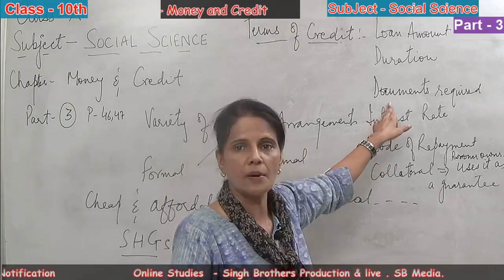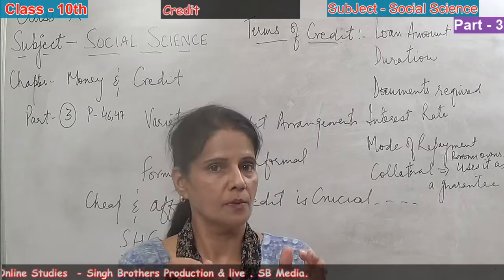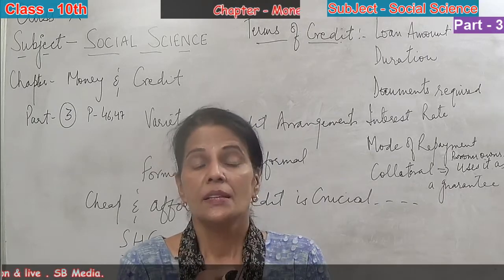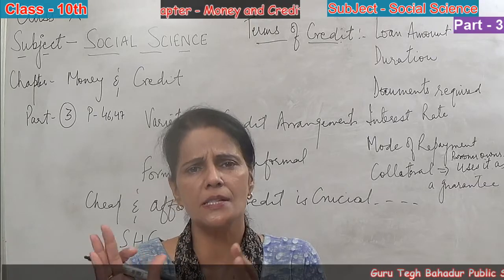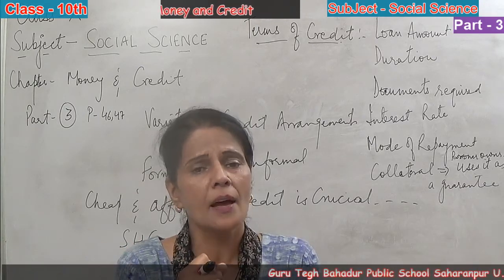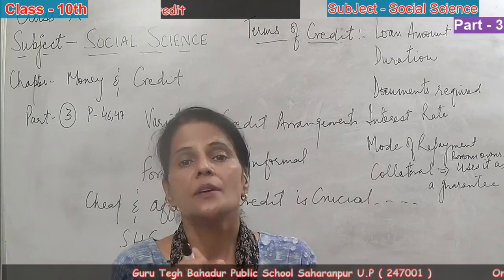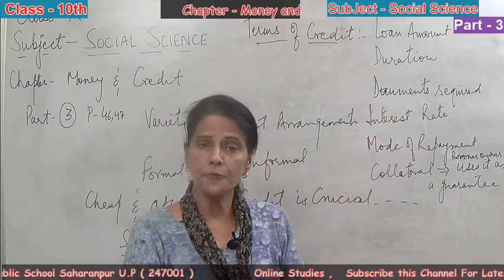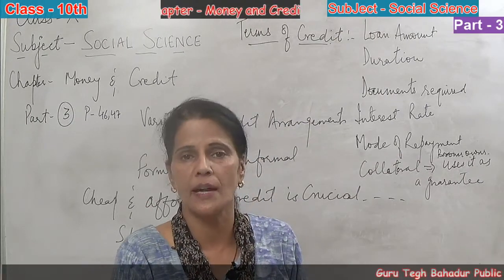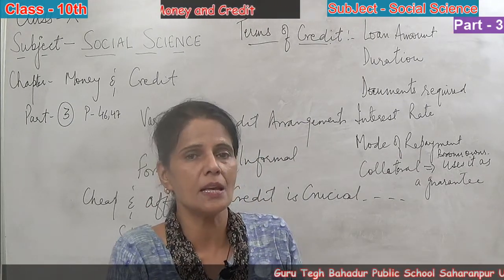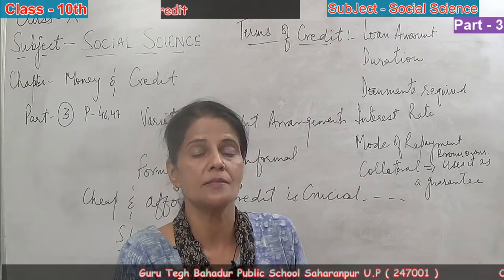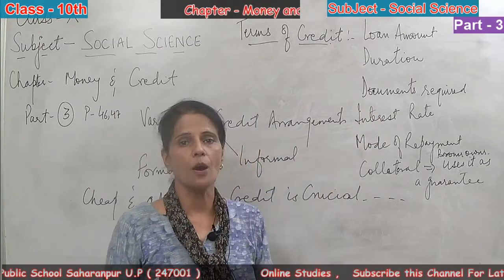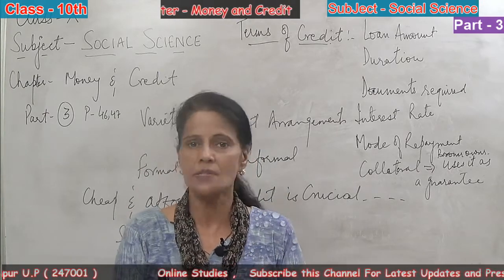In the documentation requirement, whenever a person borrows money from banks, they have to show their service certificate, mention whatever house or vehicle they are purchasing, and submit whatever documents the banks require. If the person is not an employee but a businessman, the bank checks their income tax returns to see how much income tax they file annually. This is a very important point — without fulfilling the documentation requirement, banks will not sanction money to the borrower.